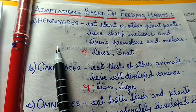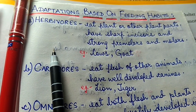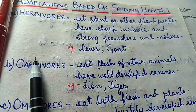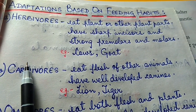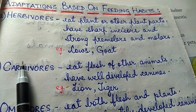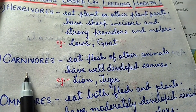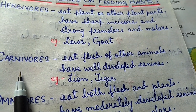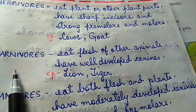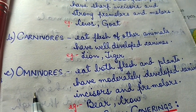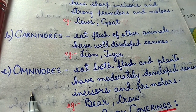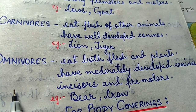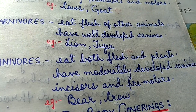Let's start with herbivores. Animals that eat plants or other plant parts are called herbivores. Example: horses, cows, etc. They have sharp incisors for biting and pulling out plant parts and strong premolars and molars to grind it. Next, carnivores. Animals that eat flesh of other animals are called carnivores. Example: lion, tiger, etc. They have well-developed canines for tearing the flesh. Next, omnivores. Animals that eat both flesh and plants are called omnivores. Example: bears, humans, etc. They have moderately developed canines, incisors and premolars.